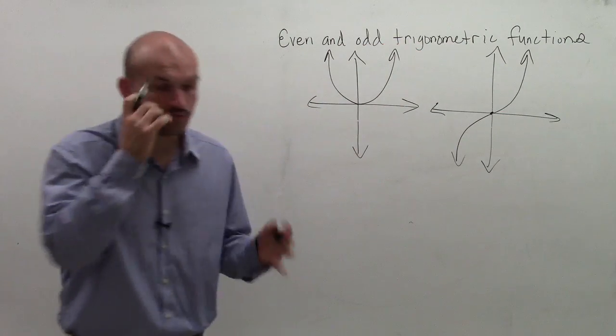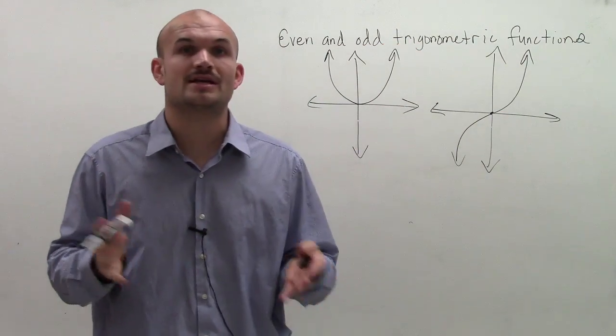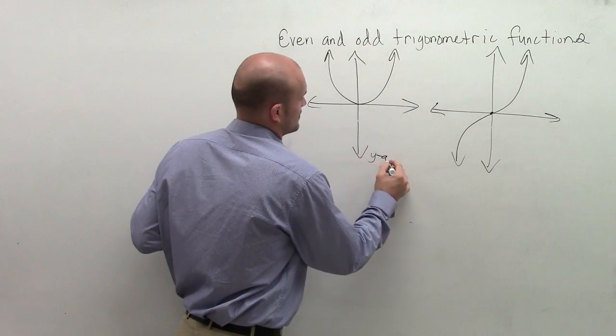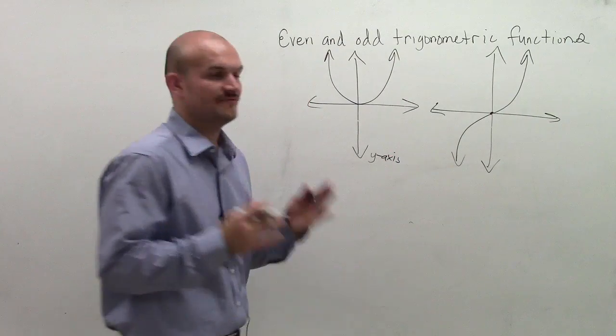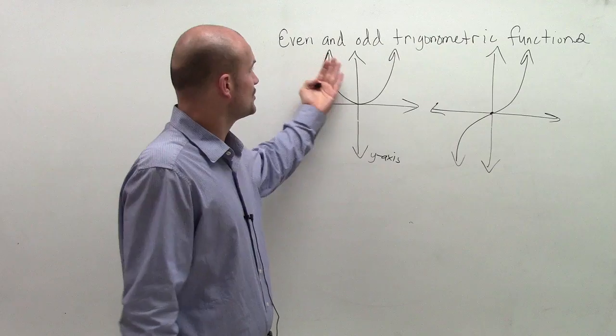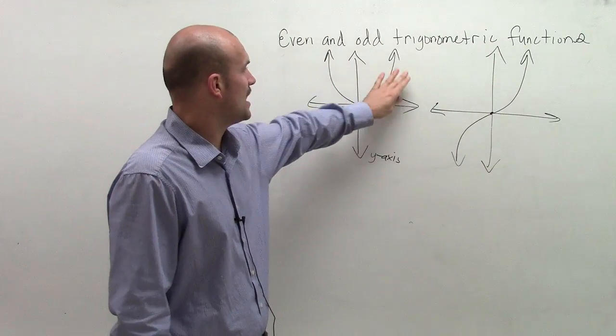So the definition graphically of functions that are even are functions that are symmetrical about your y-axis. So whatever your graph is, if it's symmetrical about the y-axis, it's said to be even. That means you can reflect your graph about that y-axis.